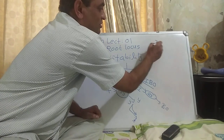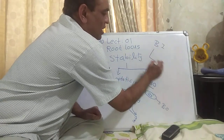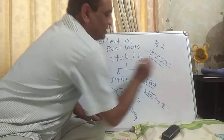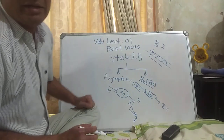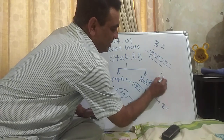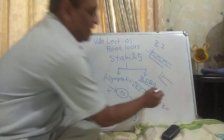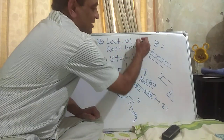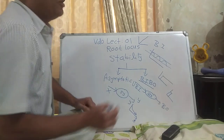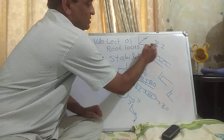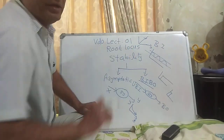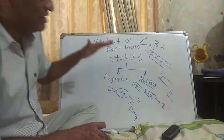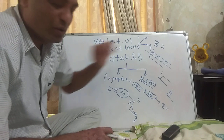What are bounded inputs? A signal bounded by two limits is a bounded signal. A step input is also a bounded signal, and an impulse input is also a bounded input. But a ramp signal is unbounded, because as time progresses the signal strength goes to infinity. So there are two notations for stability: asymptotic stability and BIBO stability.